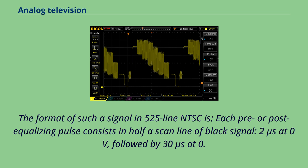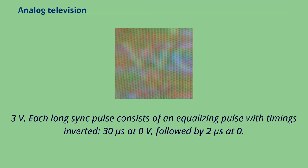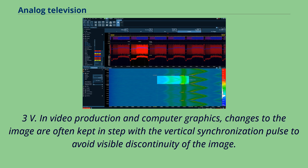In video production and computer graphics, changes to the image are often kept in step with the vertical synchronization pulse to avoid visible discontinuity of the image. Since the frame buffer of a computer graphics display imitates the dynamics of a cathode ray display, the display shows a mishmash of both frames, producing a page tearing artifact partway down the image. Vertical synchronization eliminates this by timing frame buffer fills to coincide with the vertical blanking interval.